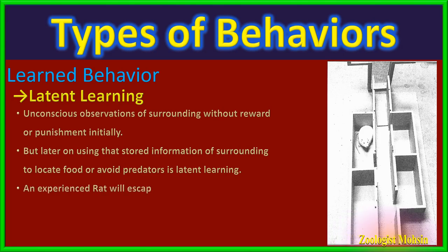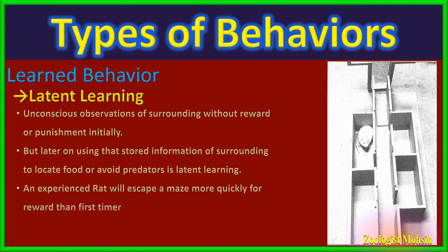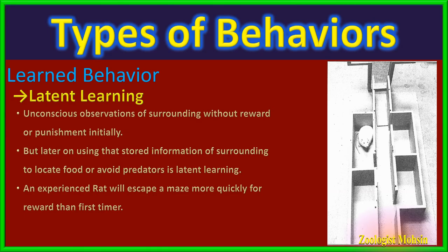In the diagram, a rat is put into a maze and initially wanders without any reward, learning how to escape the maze. But when food is placed outside the maze, that rat eats it and is already expert at quickly escaping from the maze compared to a new mouse put into the maze for the first time.